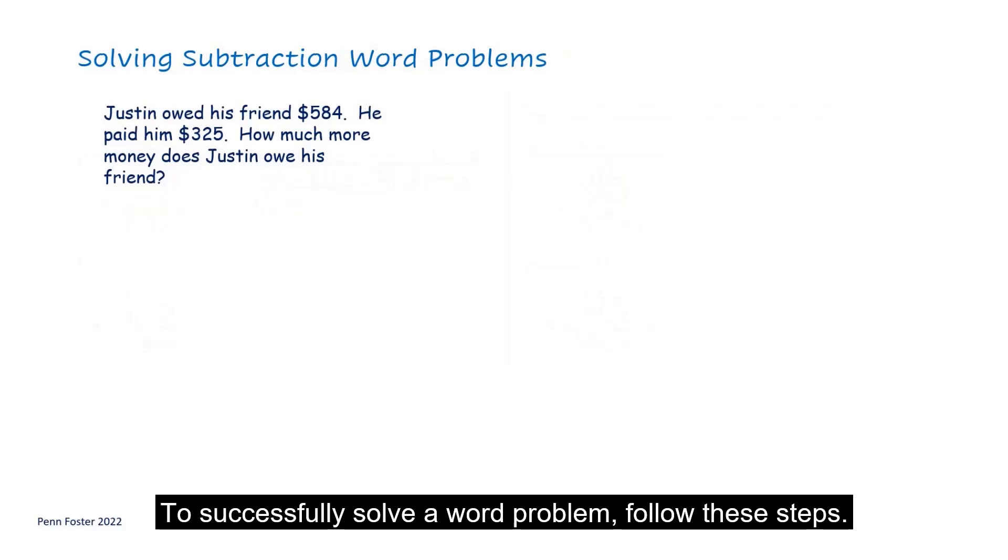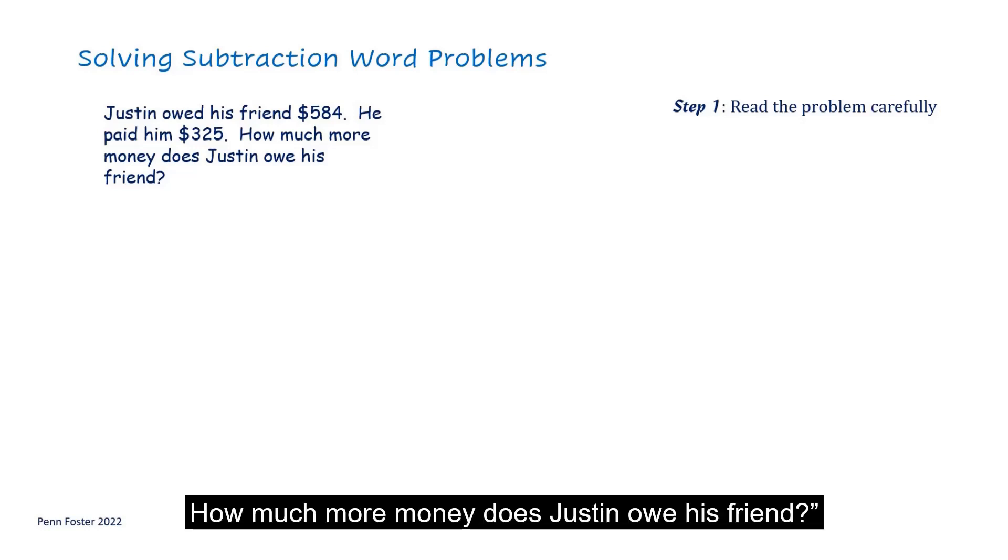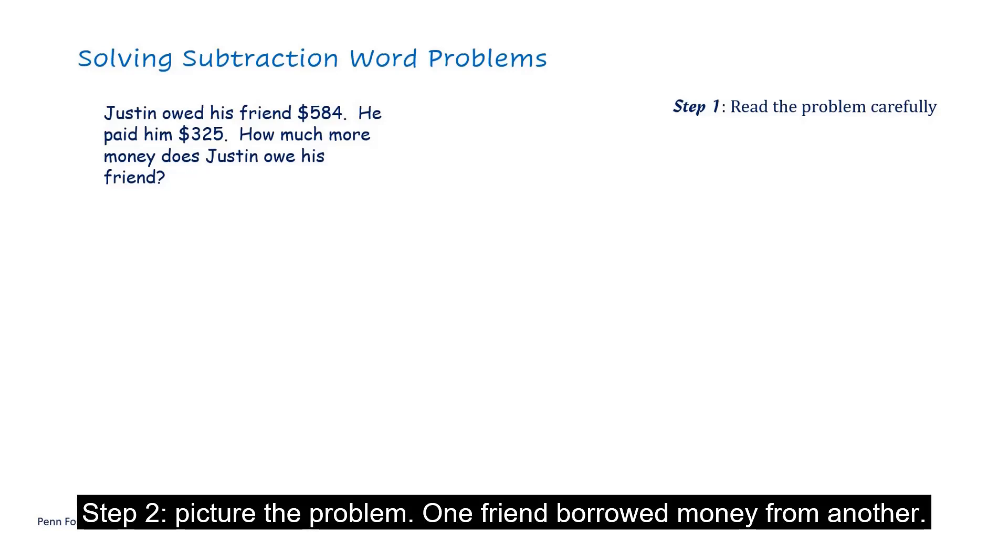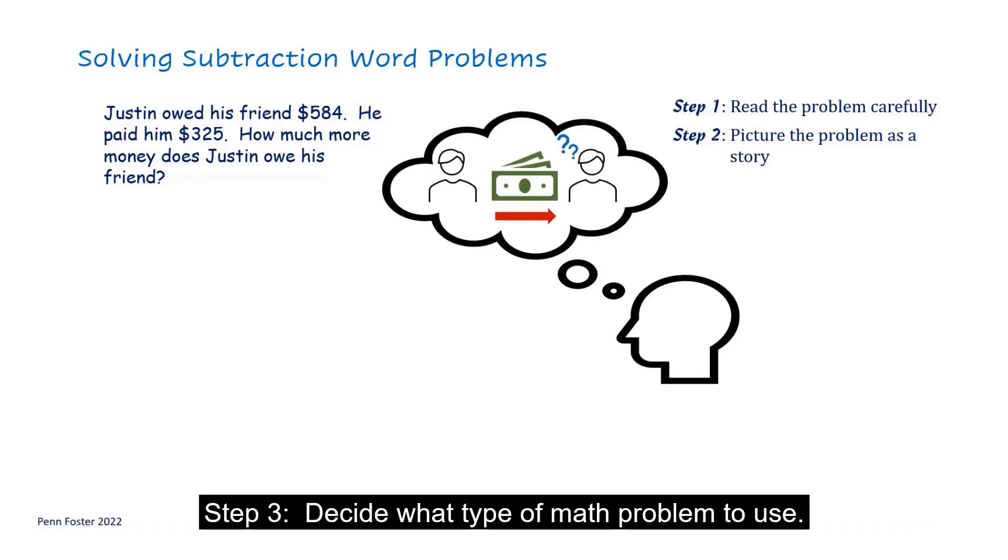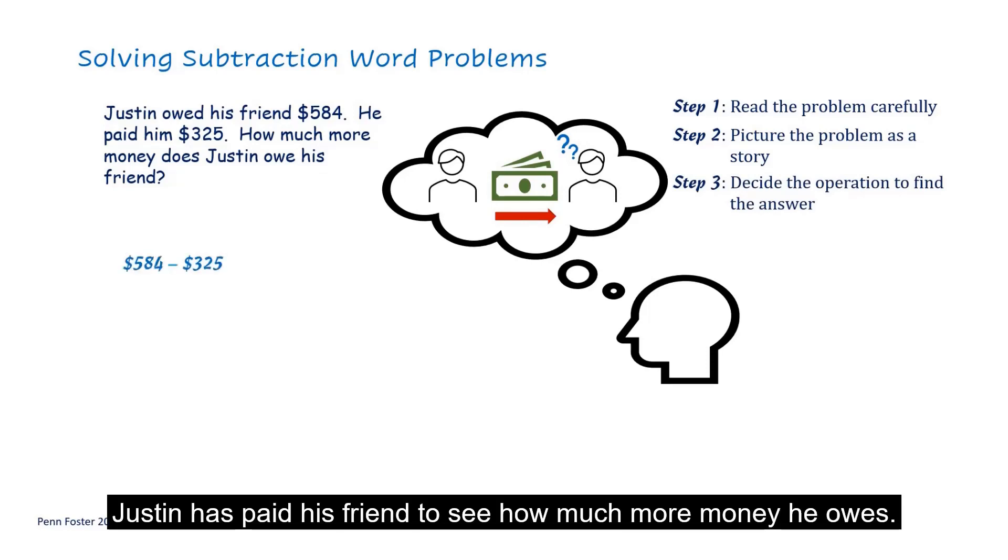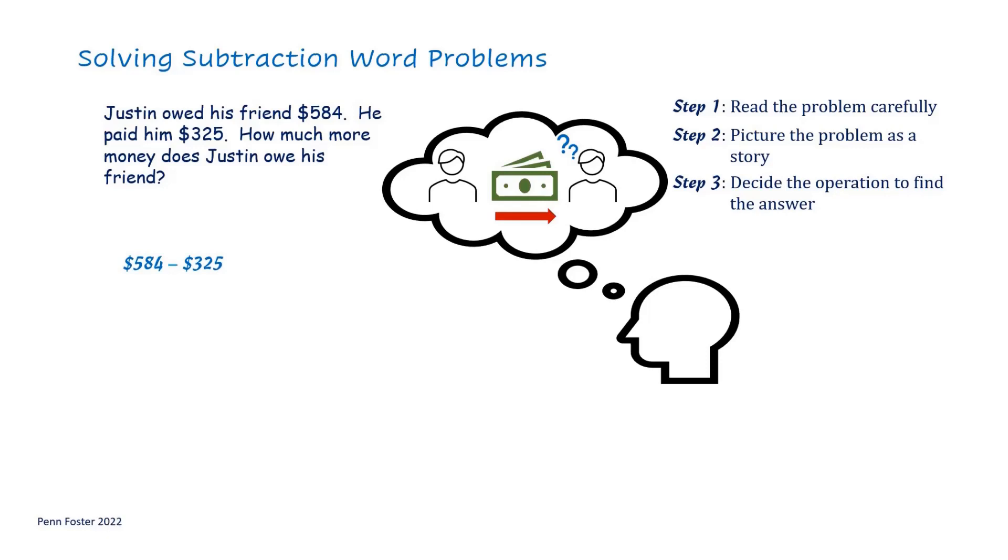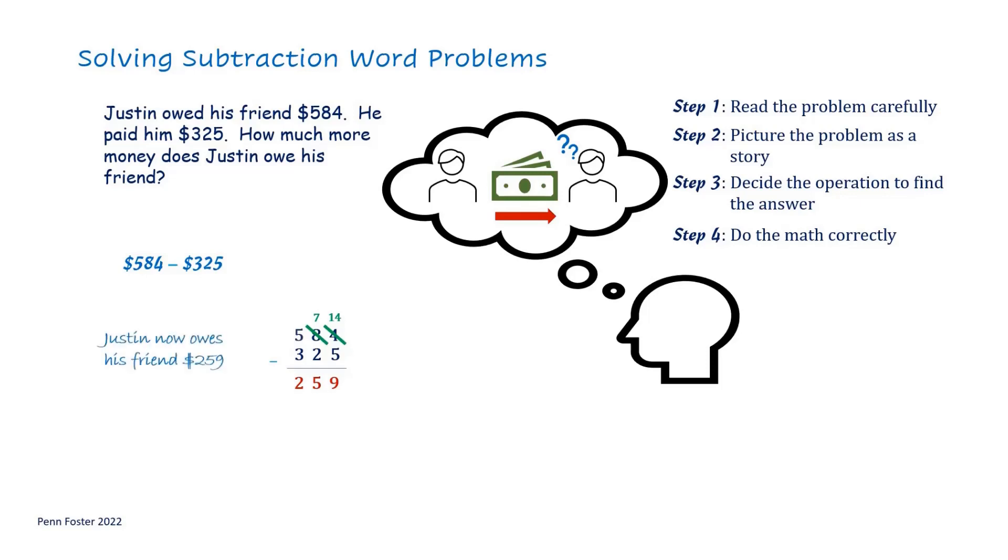To successfully solve a word problem, follow these steps. Step 1: Carefully read the problem. How much more money does Justin owe his friend? Step 2: Picture the problem. One friend borrowed money from another. Step 3: Decide what type of math problem to use. In this case, it makes sense to subtract the amount of money Justin has paid his friend to see how much more money he owes. Step 4 is to correctly solve the problem. Subtracting as before, the answer is 259. Justin now owes his friend $259.